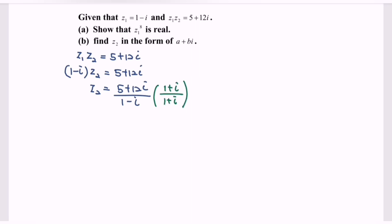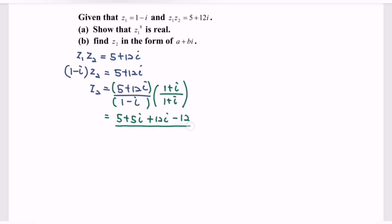Next, expand the expression. We will have 5 plus 5i plus 12i minus 12 in the numerator, over the denominator.